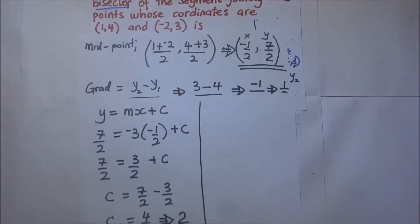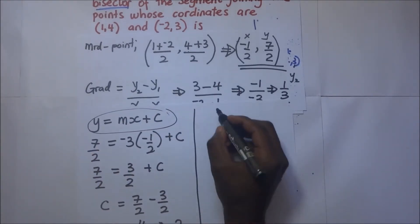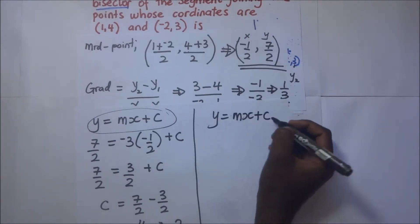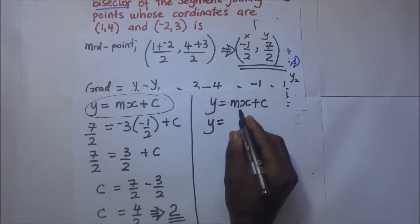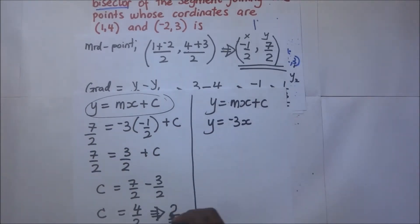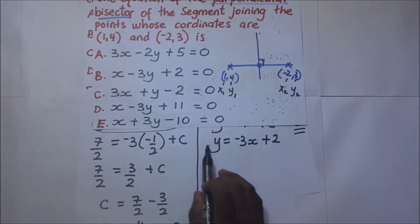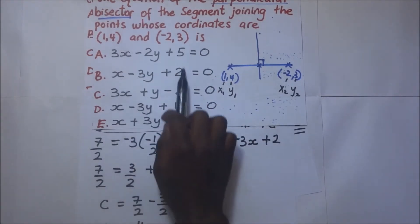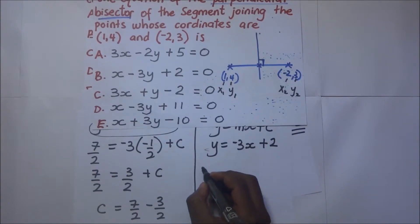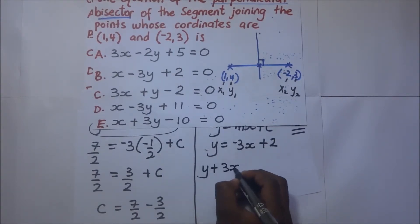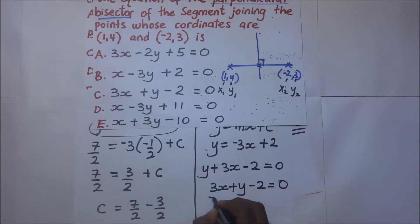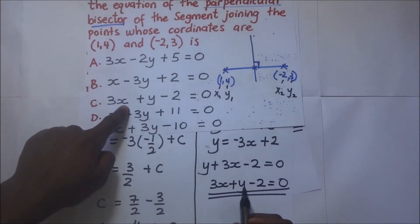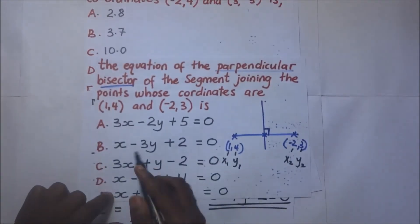Now substituting back into y = mx + c with m = negative 3 and c = 2, we get y = negative 3x plus 2. Rearranging to equal zero gives y plus 3x minus 2 = 0, which is the same as 3x plus y minus 2 = 0. The answer is option C.